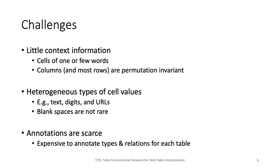For predicting the column type and the pairwise relation, we face three major challenges. First, we have little context information because typically each table cell would only contain one or few words. In addition, table columns and most rows have the permutation invariant property, which means we cannot directly rely on adjacent cells or adjacent columns for neighbor context. Second, there are heterogeneous types of cell values such as text, digits, and URLs, and we can also find blank spaces in relational web tables. How to effectively extract and fuse information from heterogeneous types of cell values is an important question. Third, column type and pairwise relation labels are often scarce because it is expensive to obtain human annotations for each table column, so we also want to overcome the shortage of labels problem.